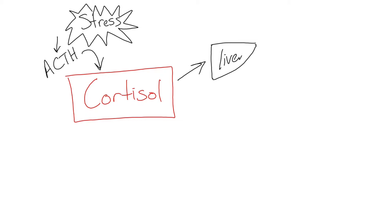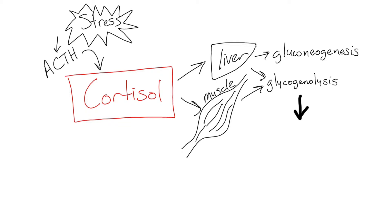It has varied actions throughout the body, but its primary role is to act on liver, adipose tissue, and muscle, to stimulate the formation of glucose, gluconeogenesis, and indirectly to break down glycogen, called glycogenolysis, all of which increase glucose in the body.